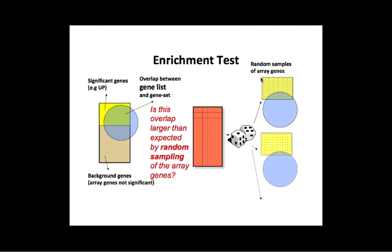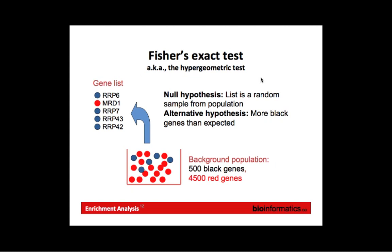If I randomly select genes — say 30 genes — how often do I get this much overlap with the gene set versus the gene list? One way to answer that is to roll the dice thousands of times, but that's time-consuming. There's a statistical test called Fisher's exact test, also known as the hypergeometric test, which computes this for you and gives you a p-value.